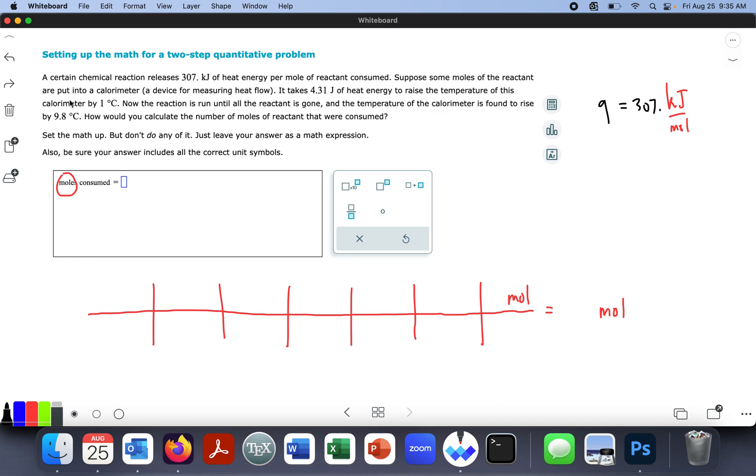Suppose some moles of the reactants are put into a calorimeter. It takes, who knows what that is, right? It takes 4.31 joules of heat to raise the temperature. All right, so another unit, joules, and it's 4.31. I'm not sure what to do here. I'll use Q for that. Let's use H for this. Just making up letters.